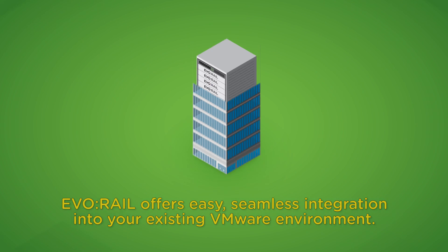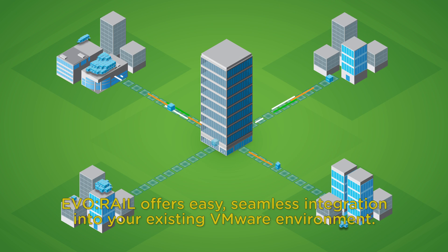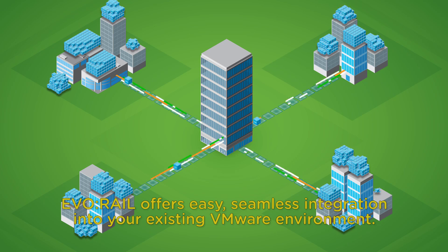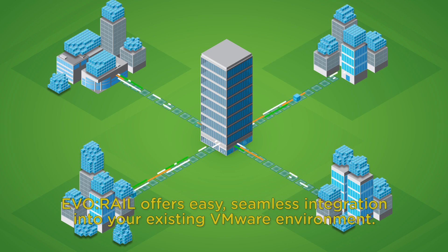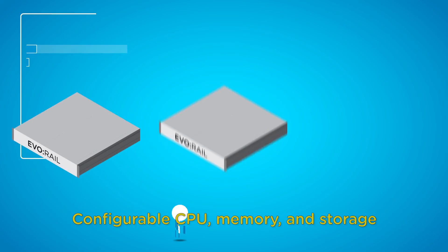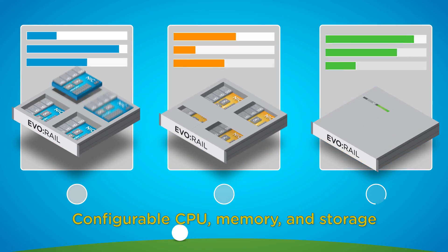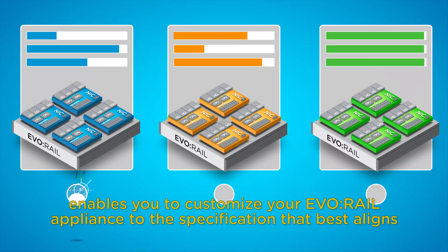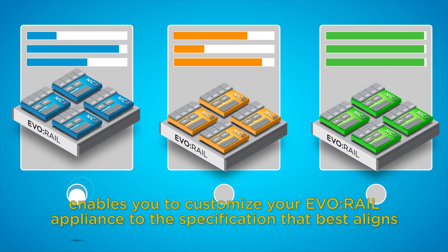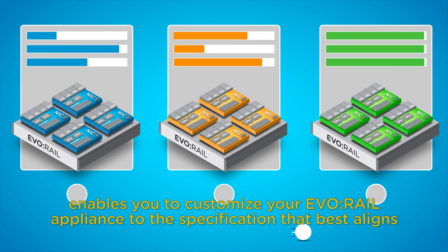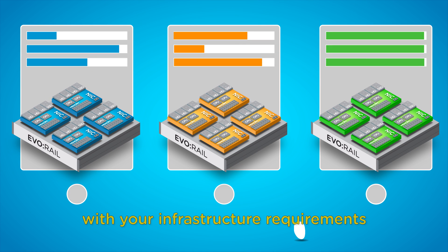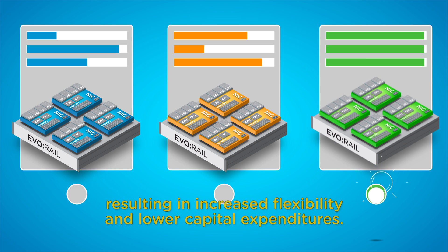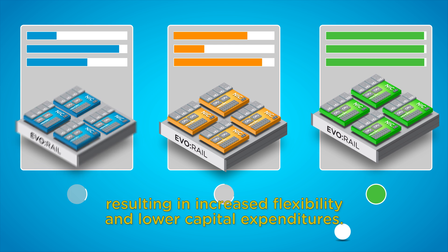EvoRail offers easy, seamless integration into your existing VMware environment. Configurable CPU, memory and storage enable you to customize your EvoRail appliance to the specification that best aligns with your infrastructure requirements, resulting in increased flexibility and lower capital expenditures.